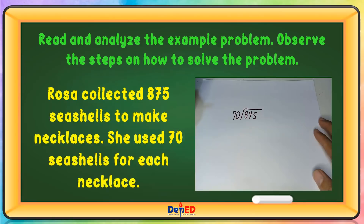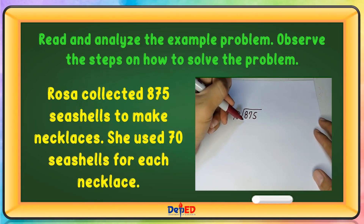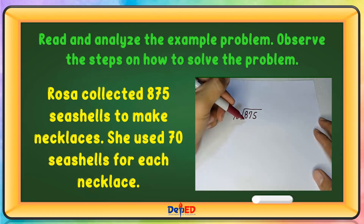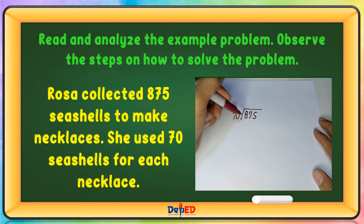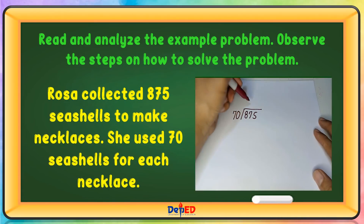Take the first number at the left of the dividend. If the first digit of the dividend is less than the divisor, take the first two digits. 87 divided by 70 is 1.